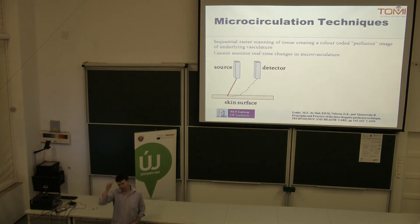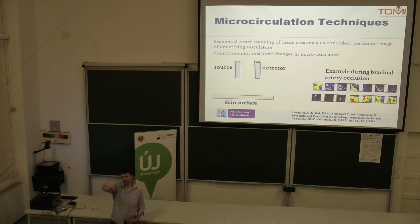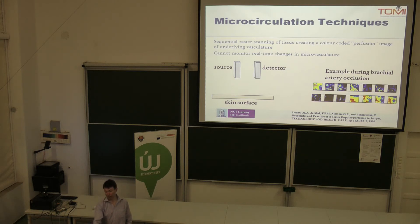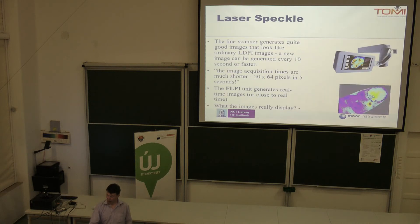Professor Ferencz has already talked about laser Doppler. To do laser Doppler scanning, you raster scan the laser beam across the surface and you can build up a picture of microcirculation. In these images, red means fast flow, dark blue means very low flow, and it's graded through the colours in between.